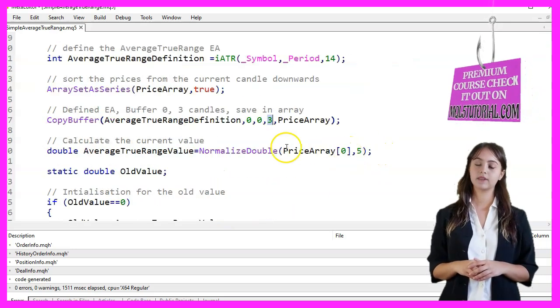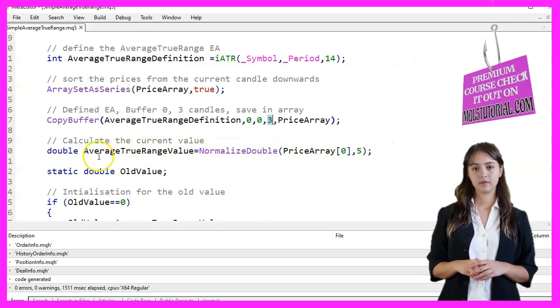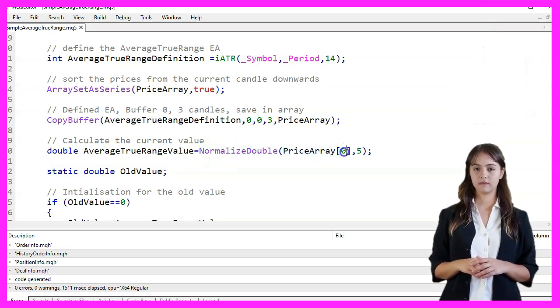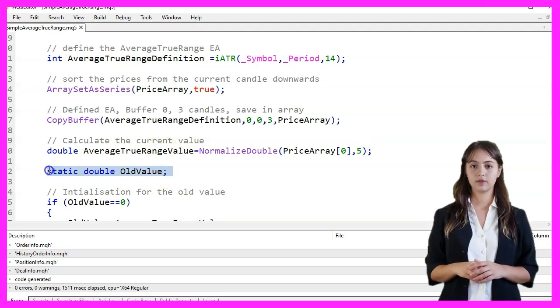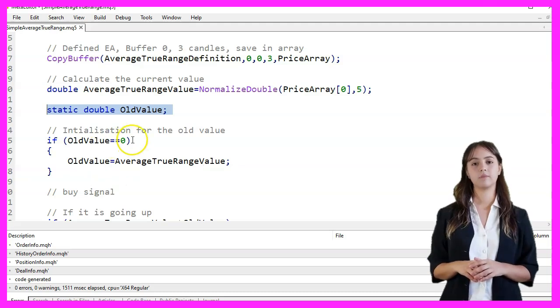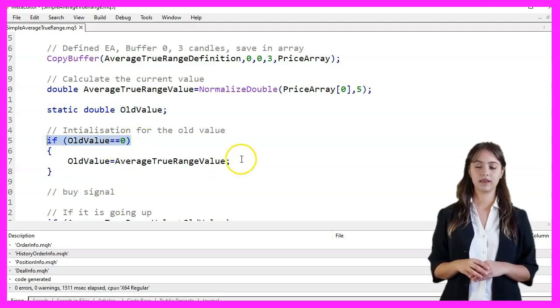We calculate the current ATR value by normalizing the first element of PriceArray to 5 decimal places. We create a static variable named OldValue to store the previous ATR value. If OldValue is 0, we initialize it with the current ATR value.